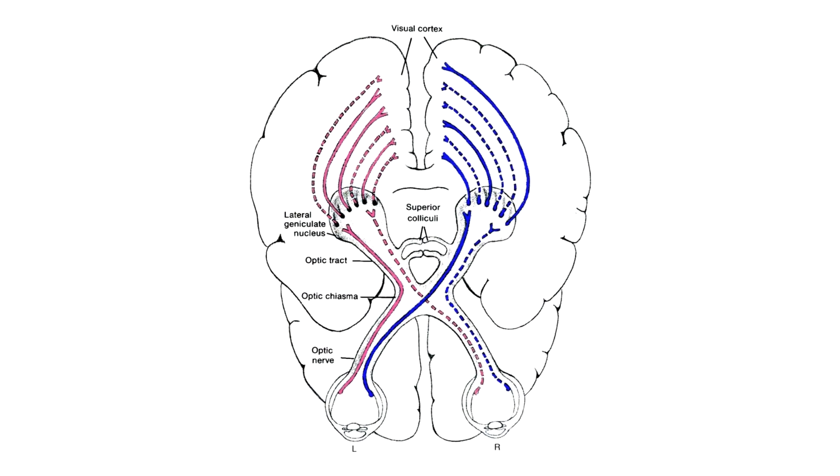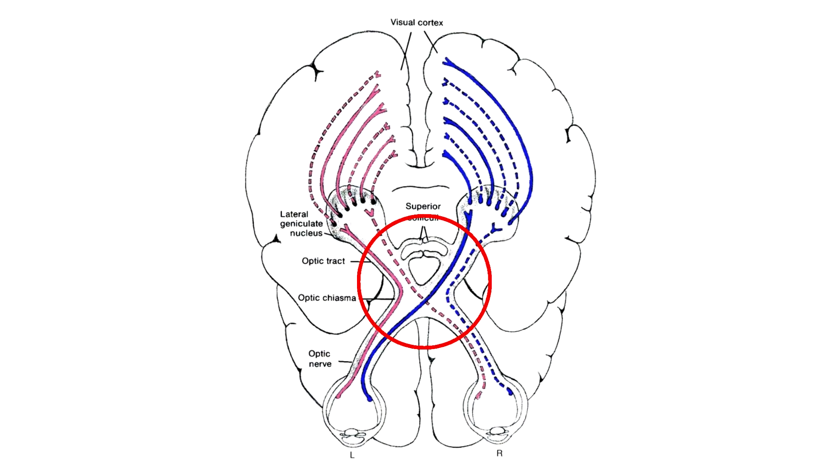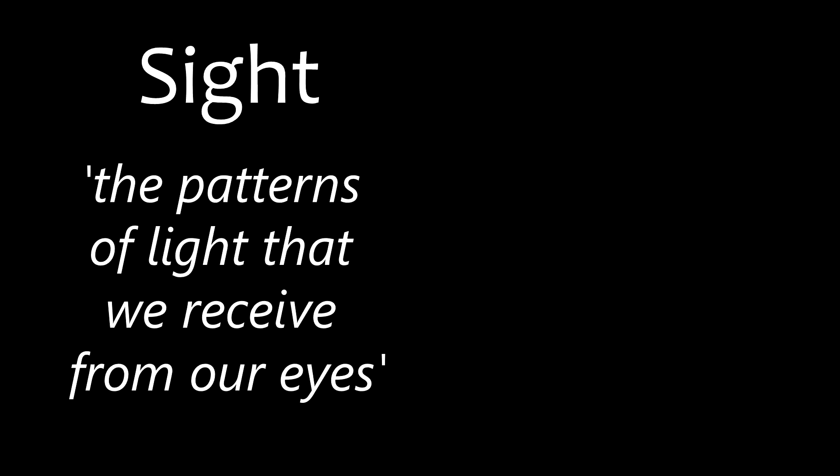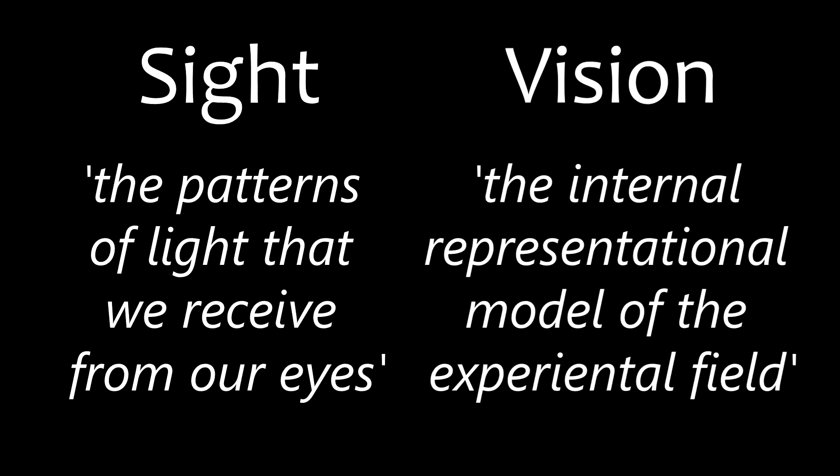But unlike most of your senses, the receptive fields of your eyes are projected equally to both hemispheres. This makes our sight, the patterns of light that we receive from our eyes, intricately and powerfully linked to our vision, the internal representational model of the experiential field in its present and potential future manifestations.